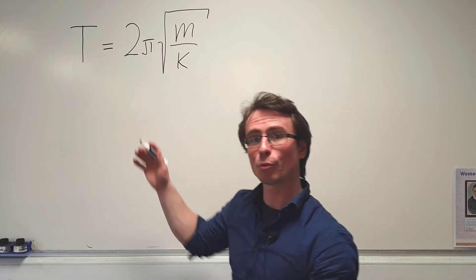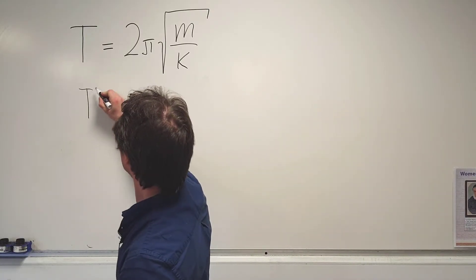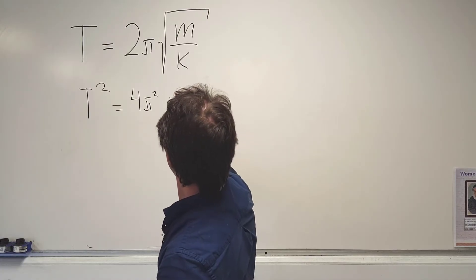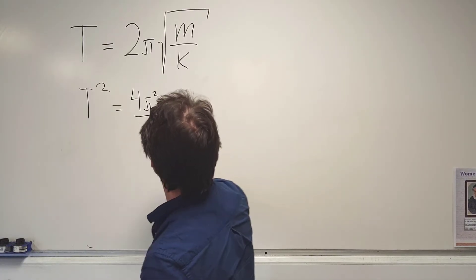For instance, we could square both sides of the equation, then we'll get that T² is equal to 4π²m divided by k.